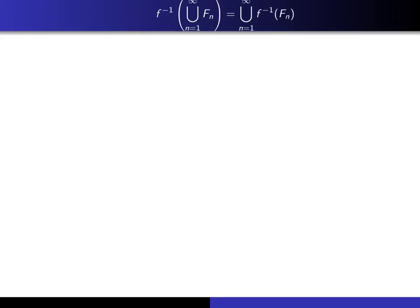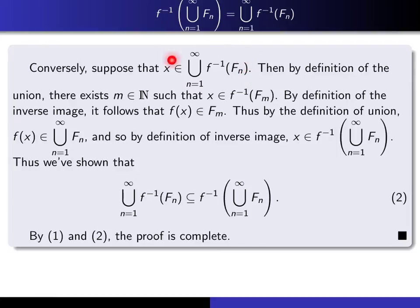Put your video on pause again and try to prove the opposite inclusion — that if x is an element of the right-hand side, then it's also an element of the left-hand side. We give ourselves an x in the right-hand side. To say you're in the union means there exists an index m such that x is in the m-th set, f-inverse of F_m. By definition of inverse image, f(x) is an element of F_m. Since f(x) is in F_m, it must be in the union of all those sets. And since f(x) is in the union, x must be in the inverse image of that union — the left-hand side. That proves the opposite inclusion.